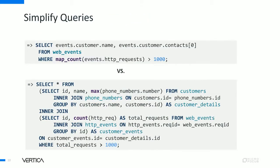Now, if you want to list all customers with more than 1,000 web requests and you have complex types, you can simply use dot notation to extract the name and contact, and also use special functions for maps to get a count of all HTTP requests greater than 1,000. However, if you don't have complex types, you'll have to join each table individually, extract the result from a subquery, join it on the outer query, and finally apply a predicate of total requests greater than 1,000 to get your final result. Complex types basically simplify the query writing path.